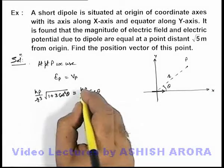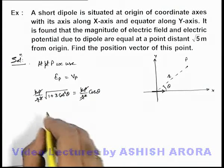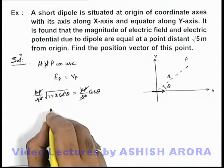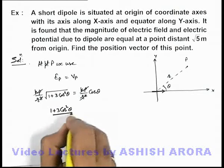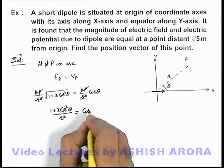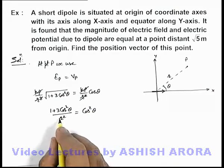Now if we just simplify here, kP gets canceled out, r² gets canceled out, so we are getting the result as √(1 + 3cos²θ)/r = cosθ. On further simplifying, we are getting 1 + 3cos²θ = r²cos²θ.